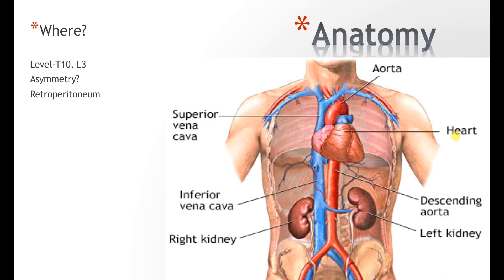Now to the anatomy. The kidney is located in the abdominal cavity — it is a retroperitoneal structure, meaning it is behind the peritoneum. The peritoneum is a serous membrane that covers some abdominal organs such as the stomach. There is a bit of asymmetry between the right and left kidney: the right kidney sits just below the liver, so the liver pushes it down.